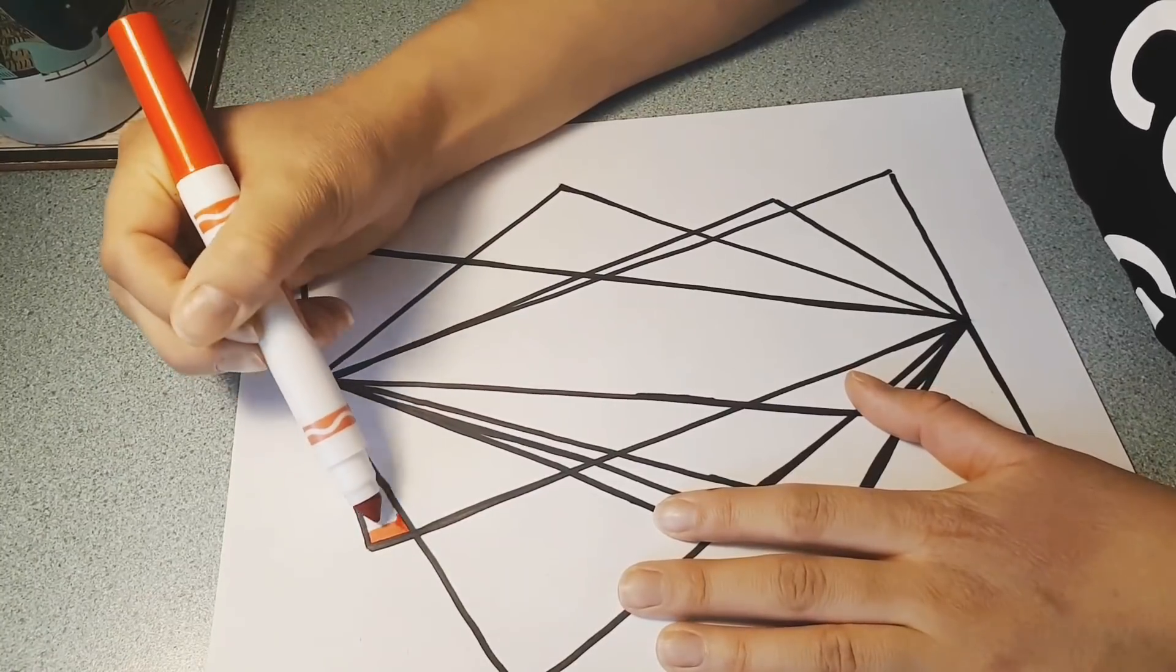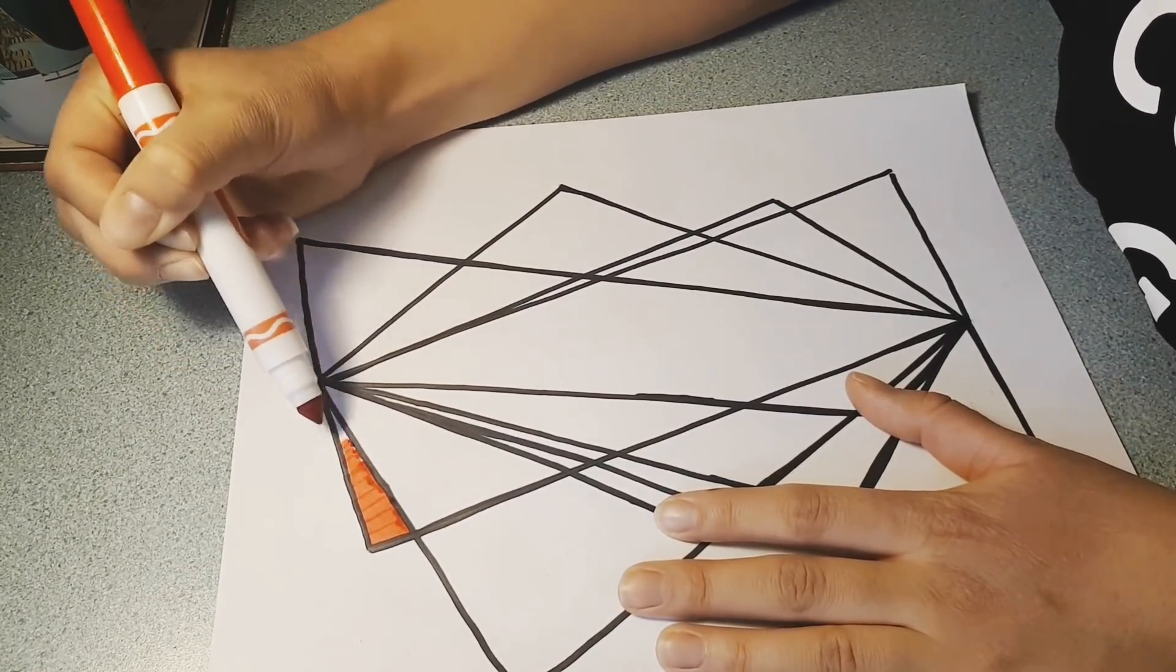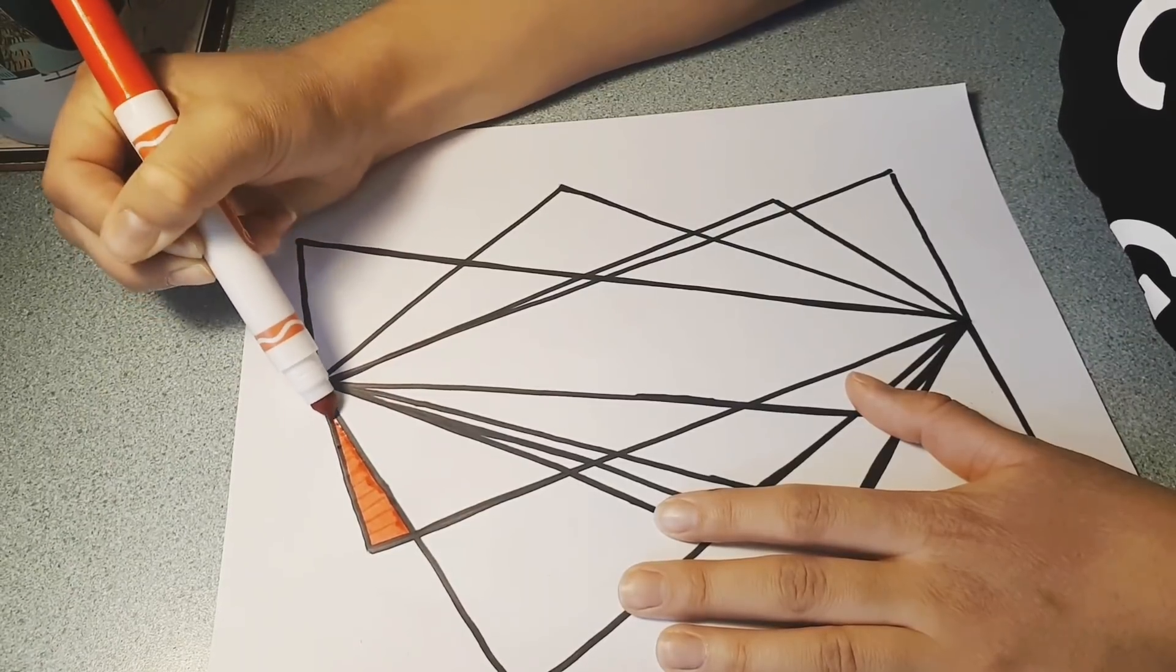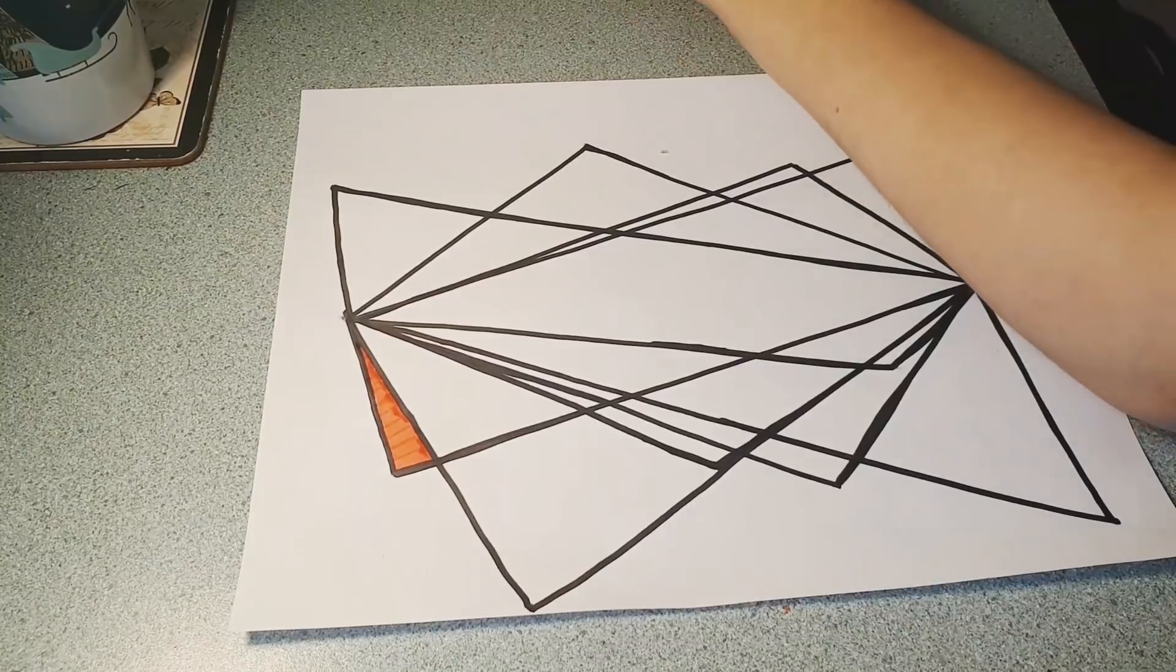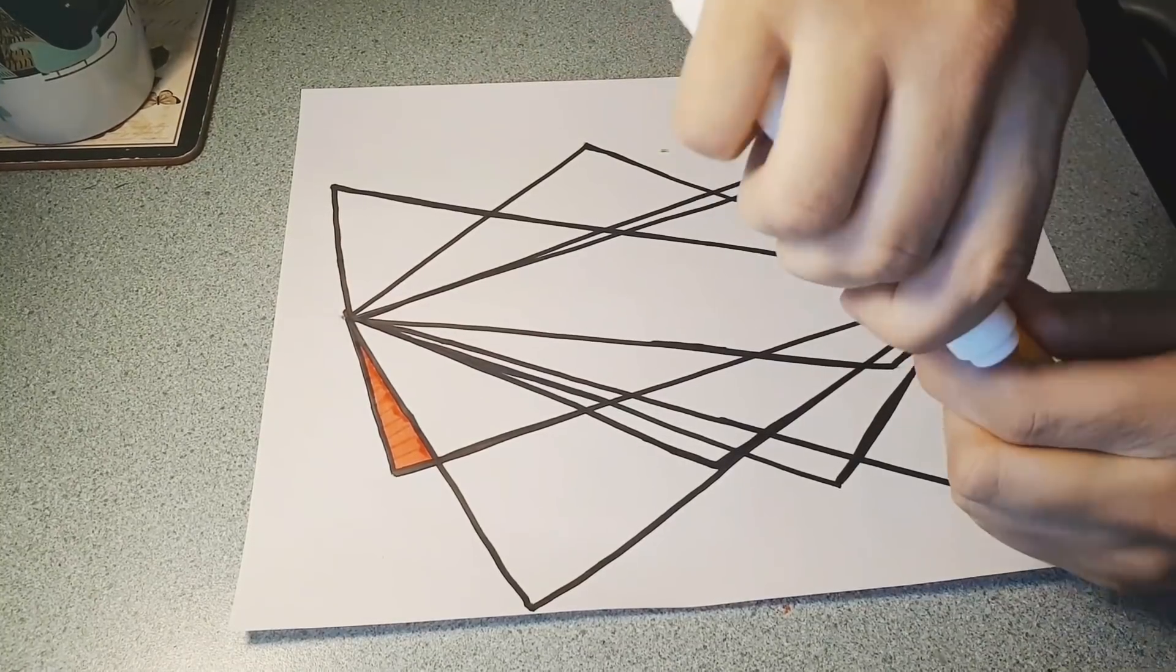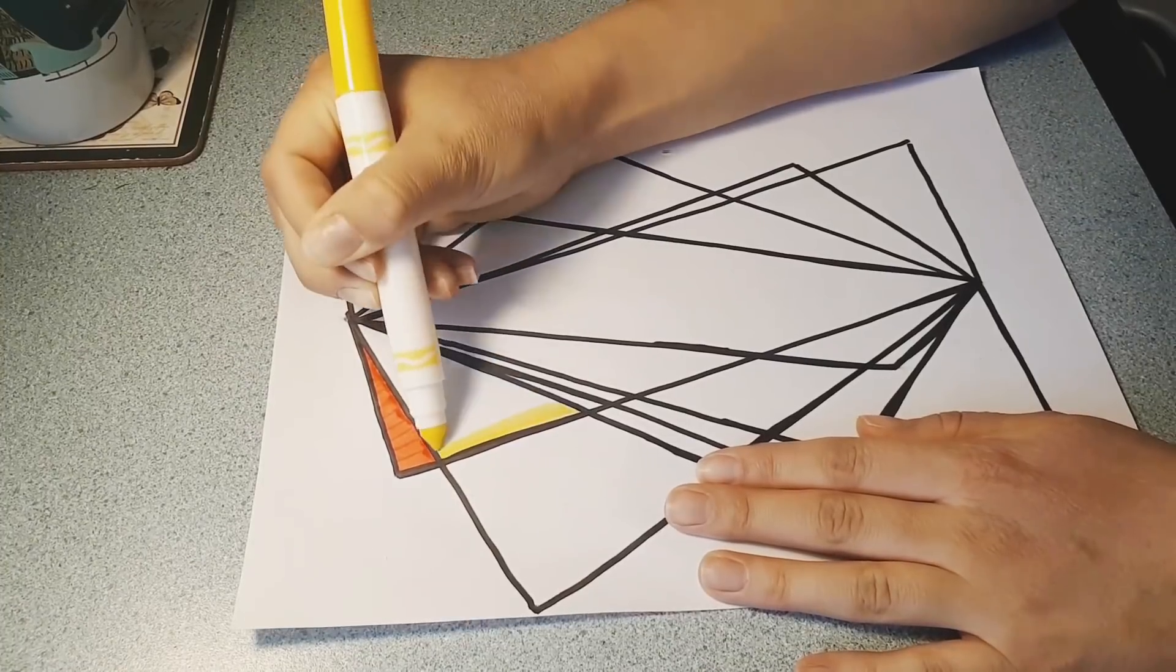The final step is to color in all of our shapes. So I'm going to start with red and I'm just going to fill up the entire shape. Now I'm going to be using all the colors of the rainbow, but you can use four colors, five colors, whatever you want.